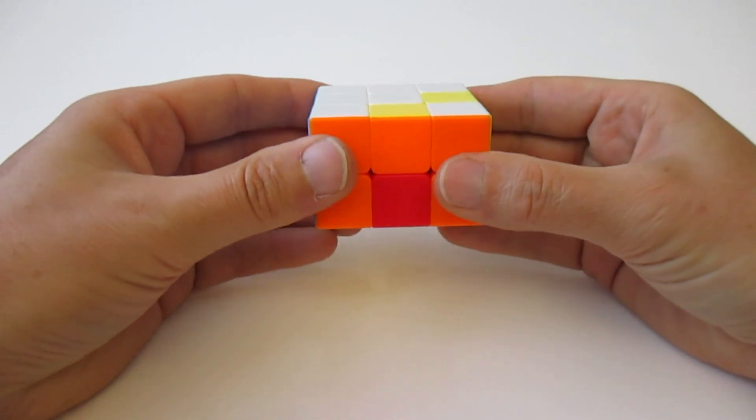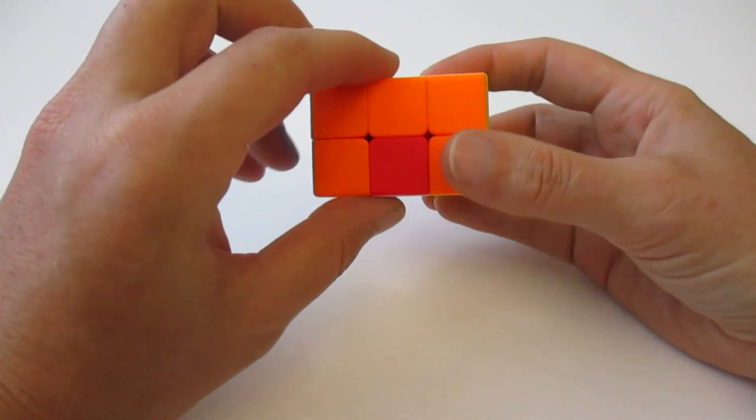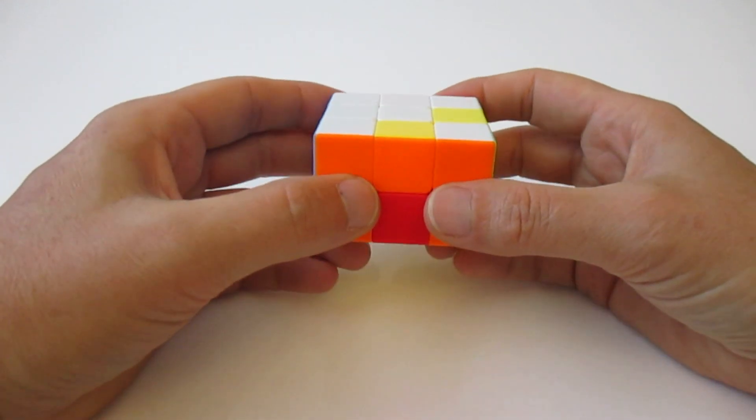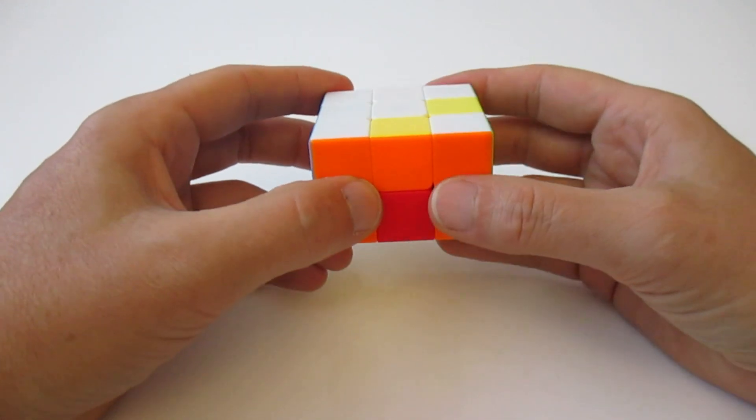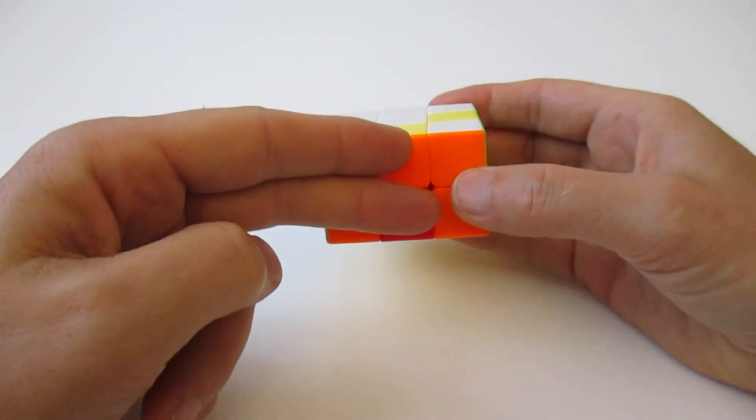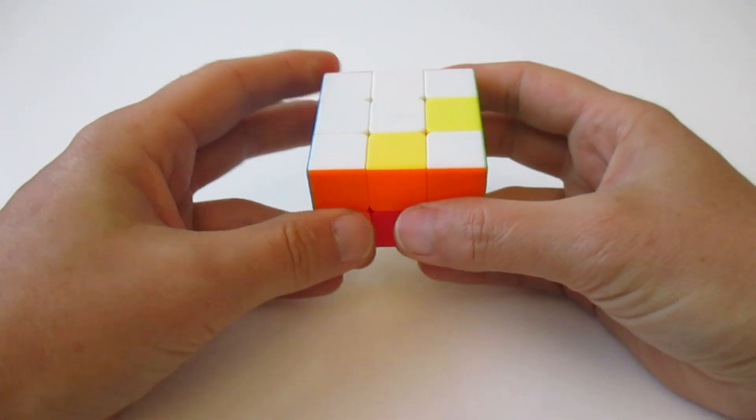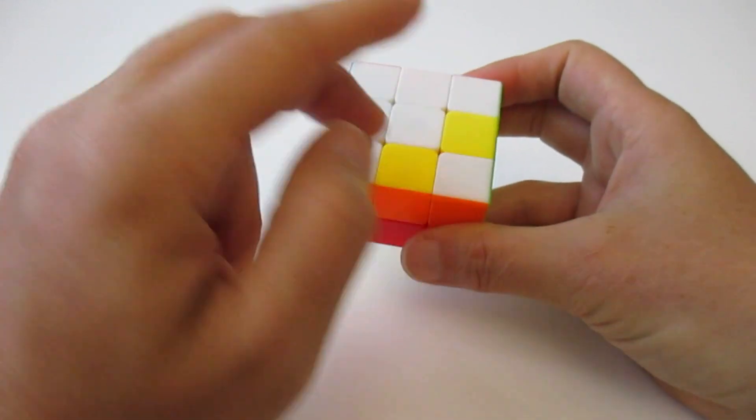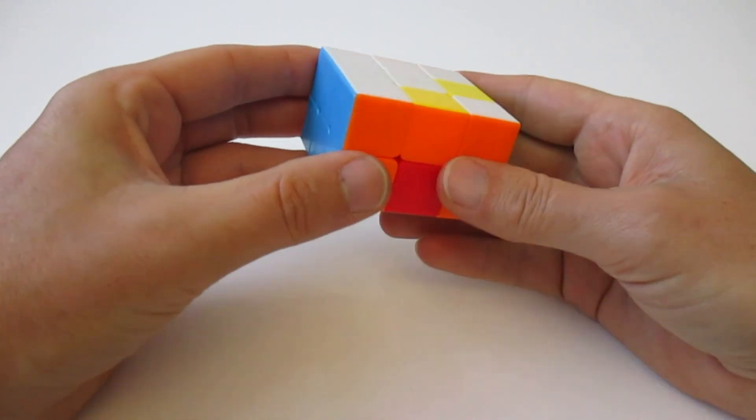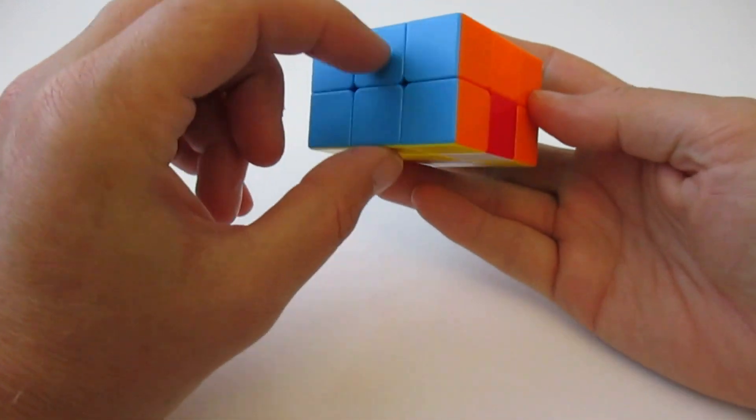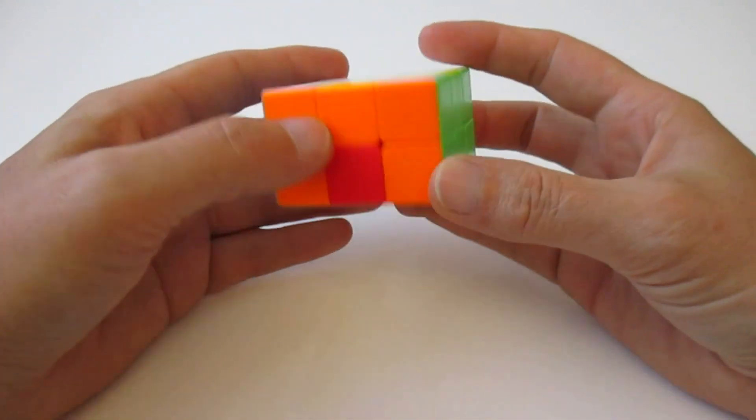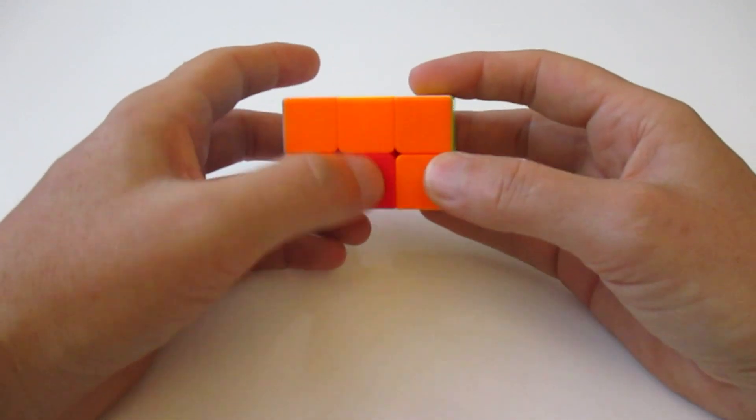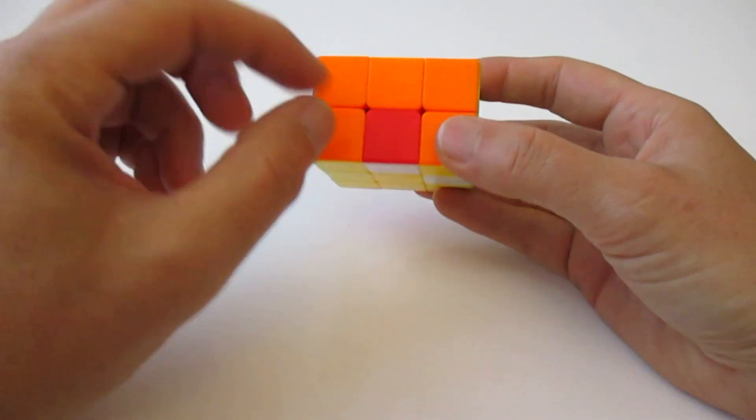So step two is to flip edges. There are two algorithms to flip edges. With one of the algorithms you flip the two front edges. And with another you flip this right one with this left one. So you change these two. Okay, so these are in correct places. I don't need to do anything. And these two are not.